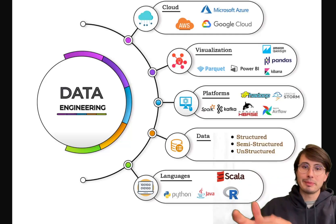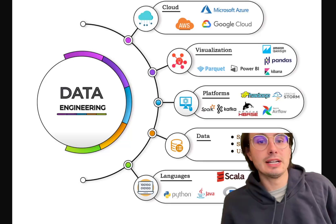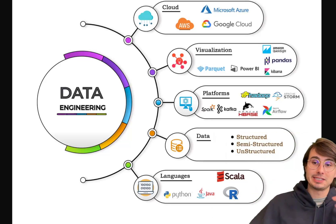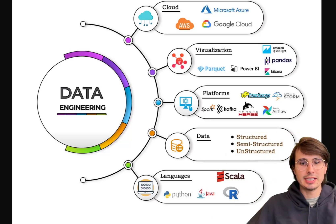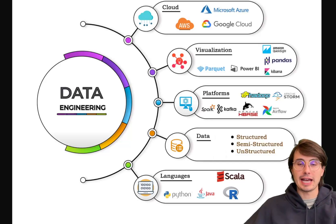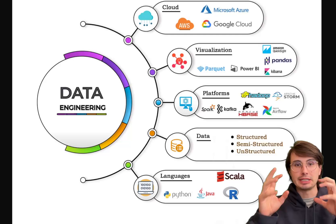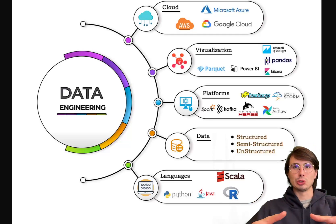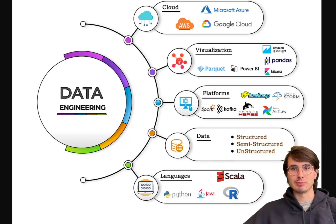From there, make sure you understand concepts like how indexing works, how to do data normalization, and what ACID properties mean. ACID stands for atomicity, consistency, isolation, and durability. Understand each of those four words, understand what it means to be ACID compliant in your transactions, and really understand the guiding database design principles you should use when thinking at a large scale about how to design your database for your particular use case.